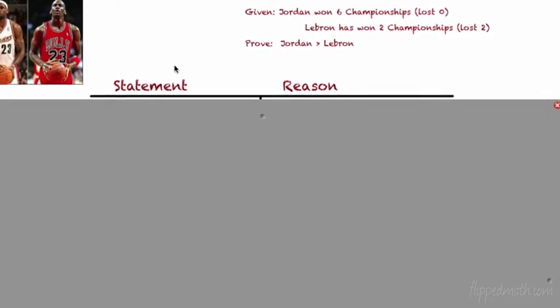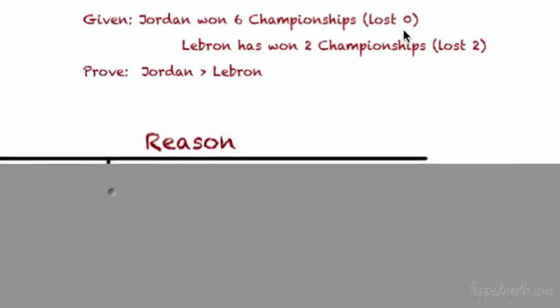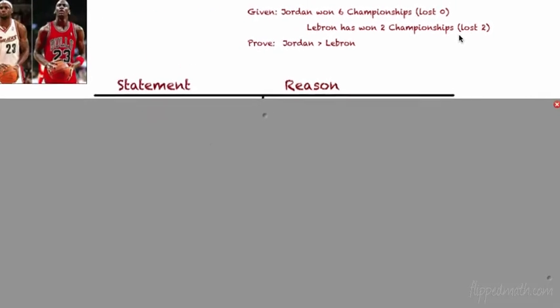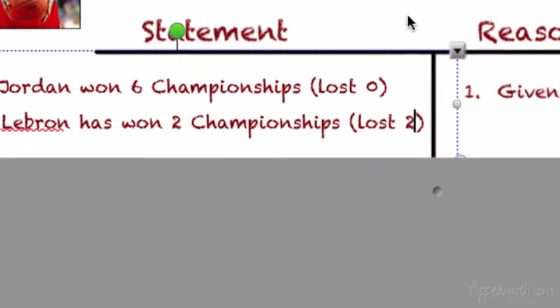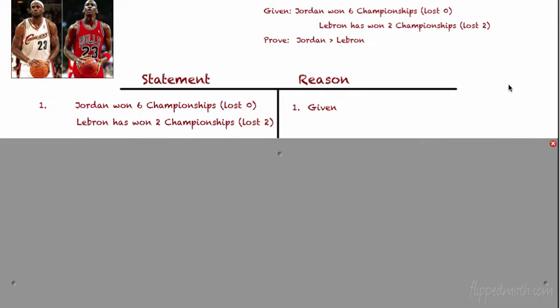So you might be wondering, what would this look like if we wrote it up in a proof? So here we go. We have LeBron James and Michael Jordan. We're going to write their argument up in a proof. Given: Jordan has won six championships — by the way, he lost zero, and he took two years off in the middle, six straight when he's playing. LeBron has won two championships, but he's also lost two. So we're going to prove that Jordan's better than LeBron. The first thing we always do in a proof, we write down the given. Our given is that Jordan has won six, LeBron has won two. The reason we always give for the first statement is always our given.